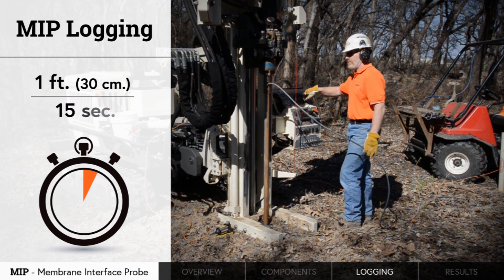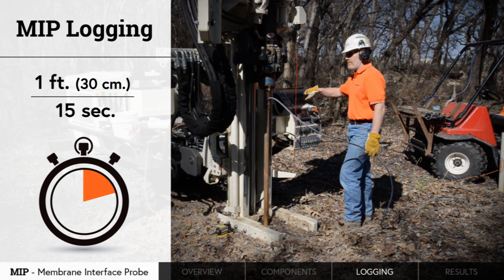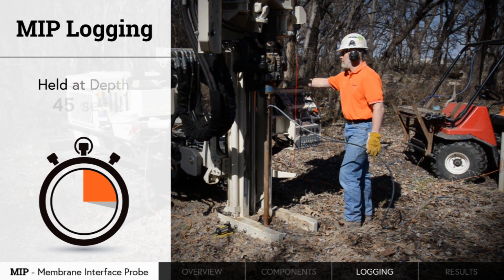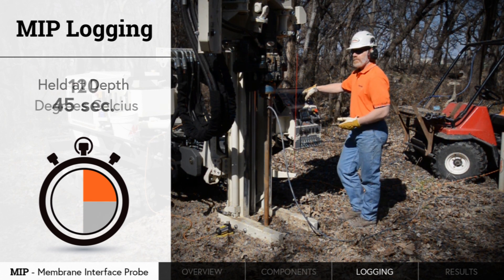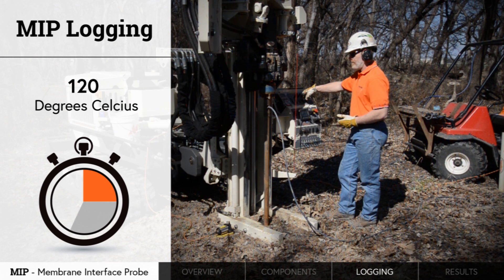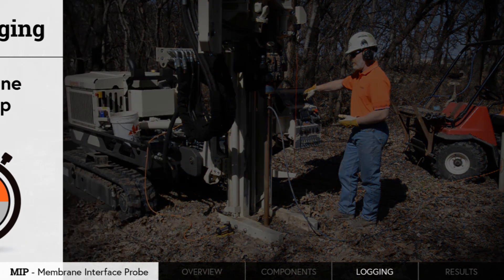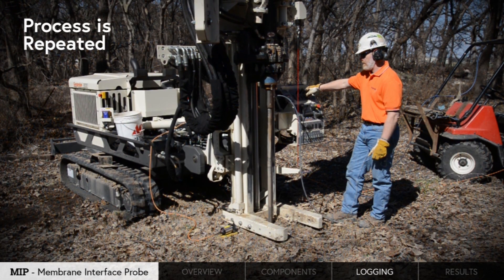This is accomplished by advancing the probe one foot over 15 seconds, then holding at that depth for 45 seconds. This is done to increase the subsurface temperature to the 120 degrees Celsius set point, which enhances contaminant volatilization and diffusion across the membrane. This also encourages membrane cleanup as the probe is advanced through contaminant zones. The process is repeated until the predetermined log depth is reached or until refusal is attained.